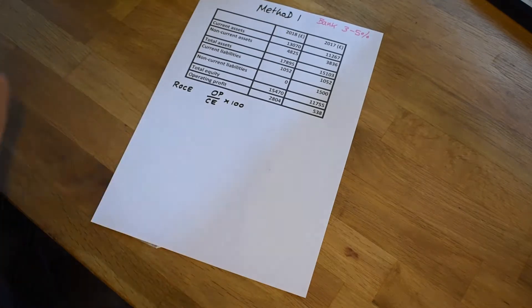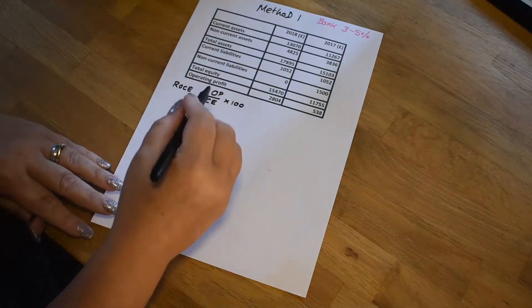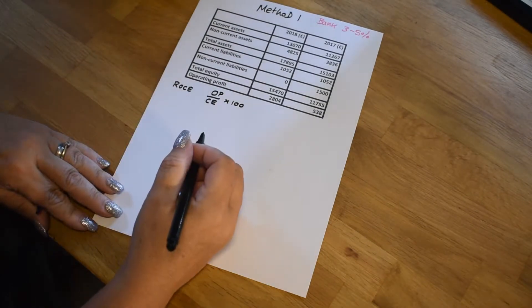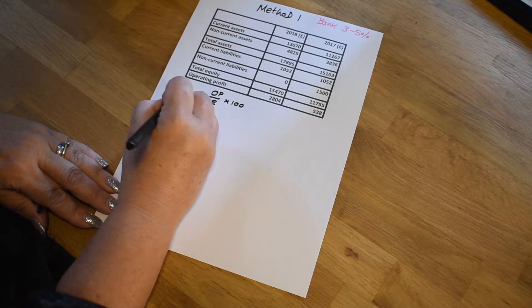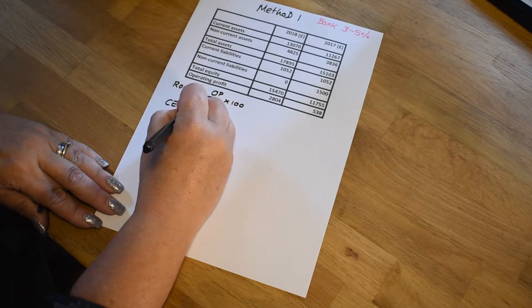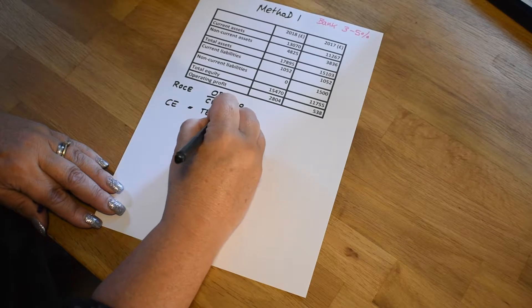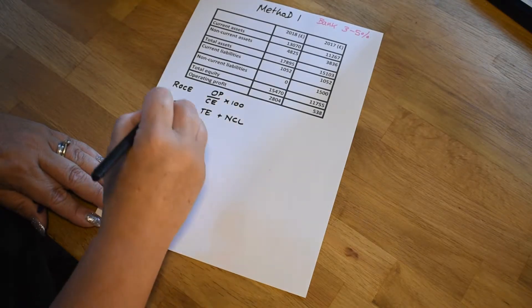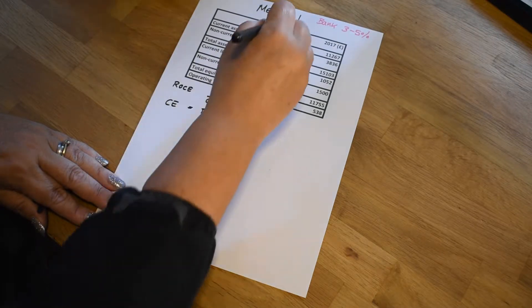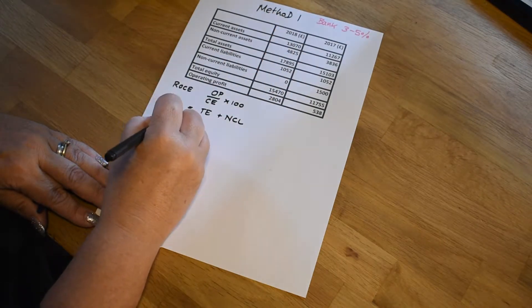And it really does depend on what's in your table of data. Now in this particular one, we've got total equity. So to find our capital employed, we use the formula total equity plus non-current liabilities. So we're going to make that calculation. So we start with 2018.